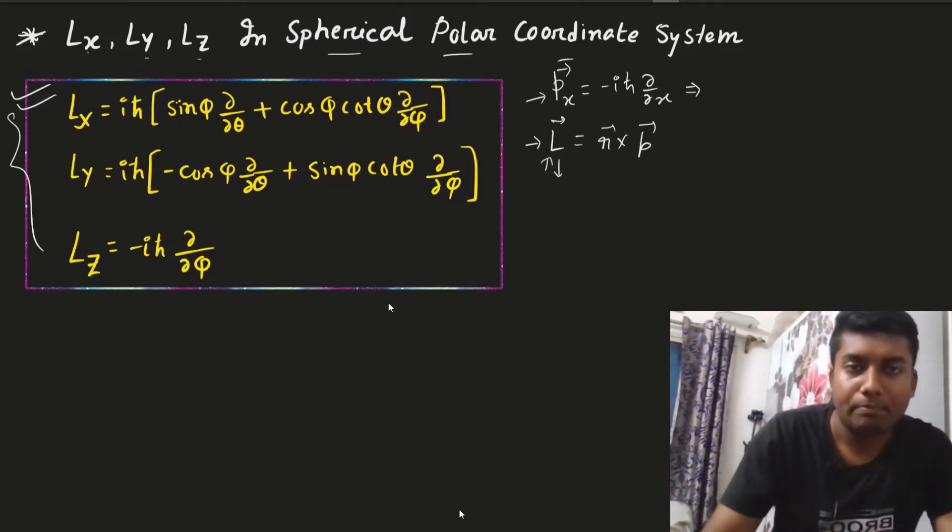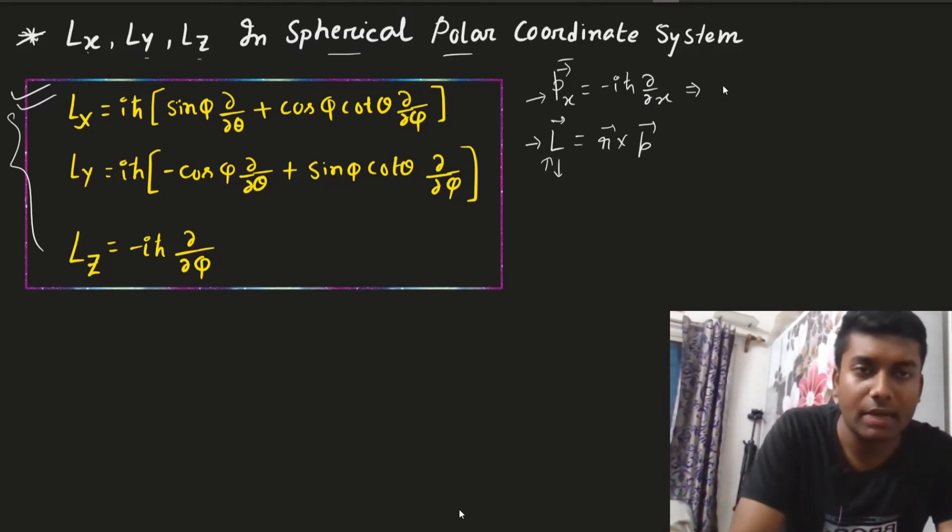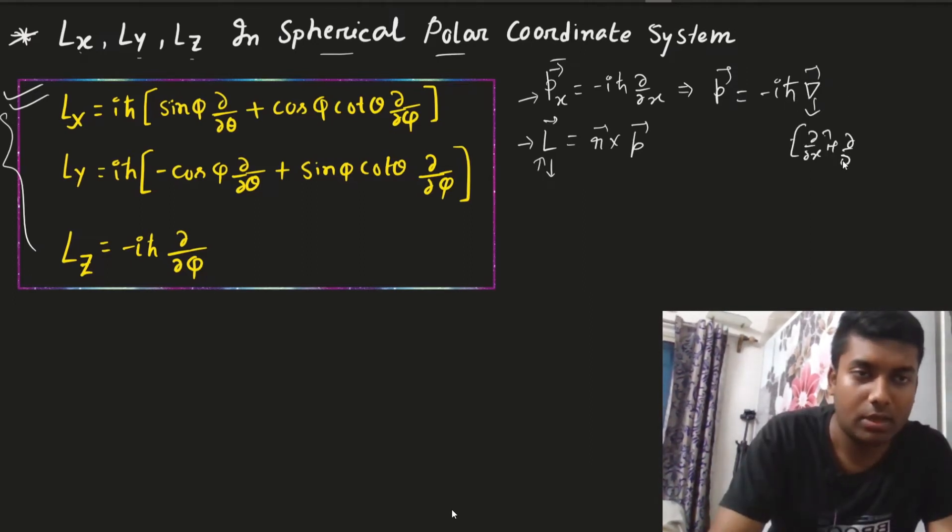So we have to find its three-dimensional form. This is 1D form. So the three-dimensional form is very much easy and that is the P vector is equals to minus I H cross H cut gradient. Now gradient is what? Gradient is del del X I cap plus del del Y J plus del del Z K cap.